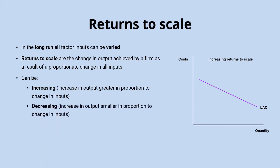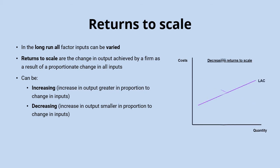A firm might experience decreasing returns to scale, where the increase in output is smaller in proportion to the change in inputs. This can be seen on an upward sloping long run average cost curve, where output is increasing by less than the increase in inputs, so the cost per unit is likely to be rising.